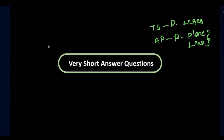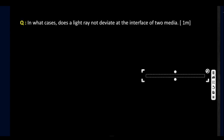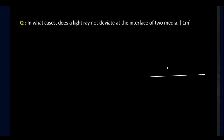Let's get started with the first short answer question, worth one mark: In what cases does a light ray not deviate at the interface of two media? When light travels from one medium to another it bends due to change in refractive index. If there is no change in refractive index, there won't be any refraction. So the first case is when the refractive index of both media is the same.